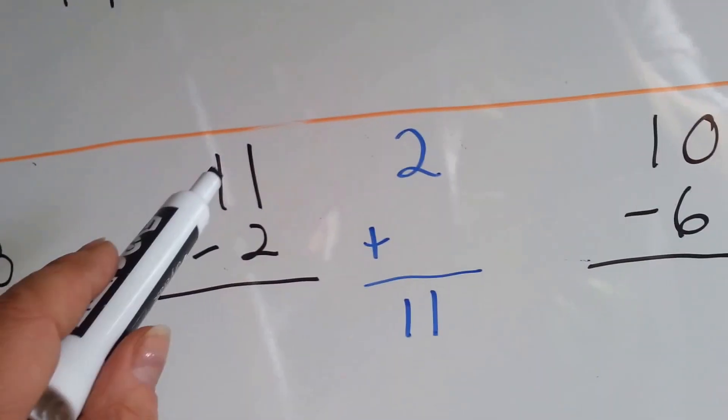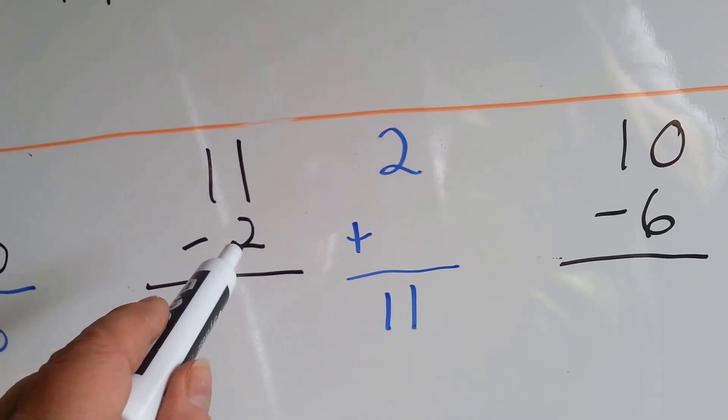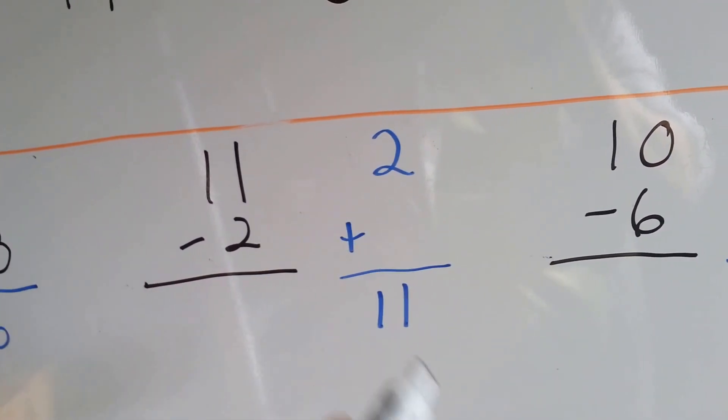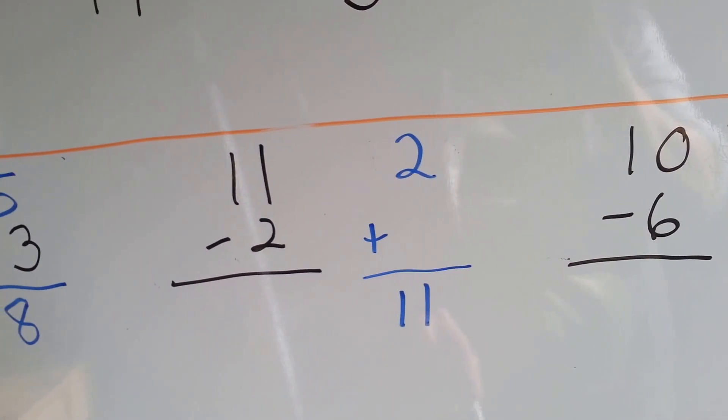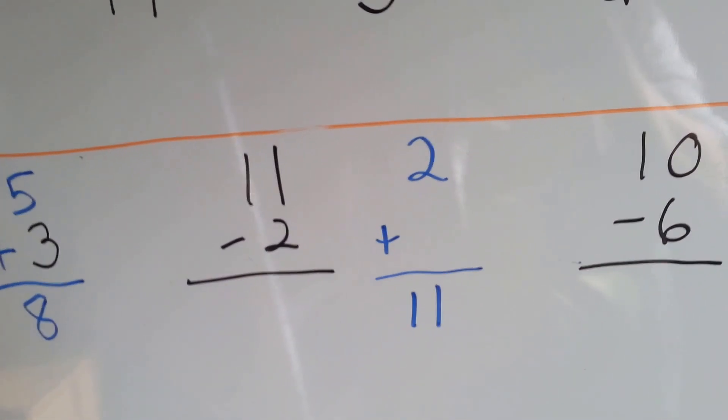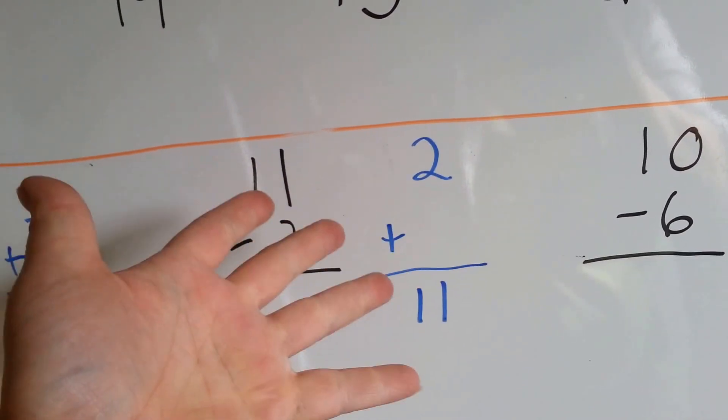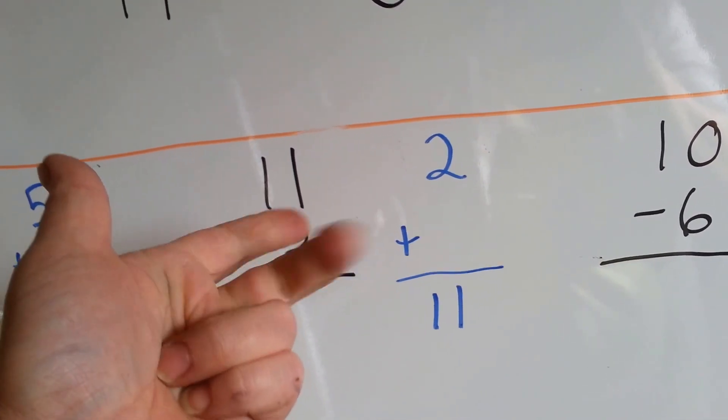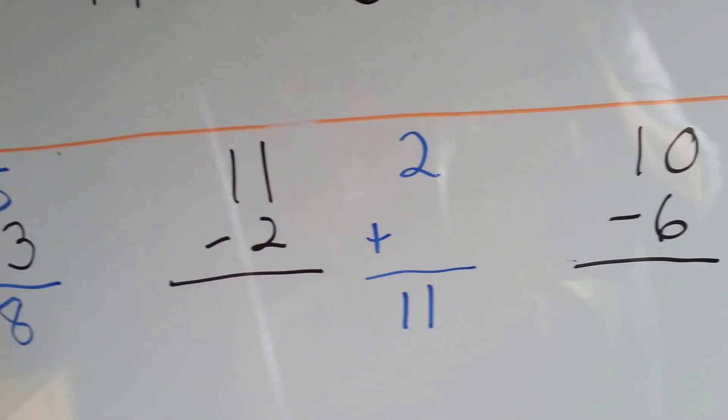How about this one? 11 take away 2. Well, 2 plus what is 11? 2, 3, 4, 5, 6, 7, 8, 9, 10, 11. That was 9 fingers.